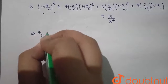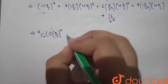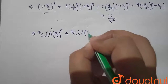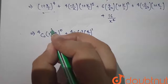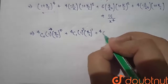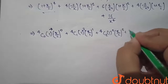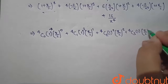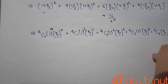Expanding (1 + x/2)^4 using binomial theorem: 4C0·1·(x/2)^0 + 4C1·1·(x/2)^1 + 4C2·1·(x/2)^2 + 4C3·1·(x/2)^3 + 4C4·(x/2)^4.